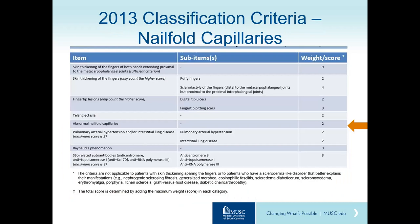Next, I want to talk about nail-fold capillary morphology. As shown in the 2013 classification criteria slide, the presence of abnormal nail-fold capillaries is one of the criteria for the classification of systemic sclerosis.